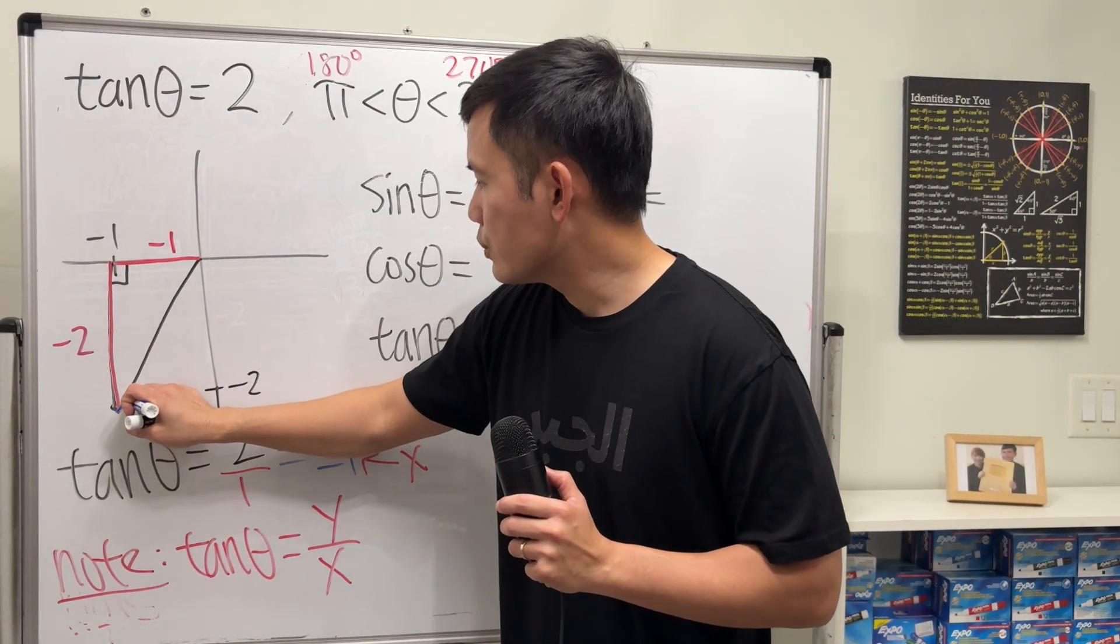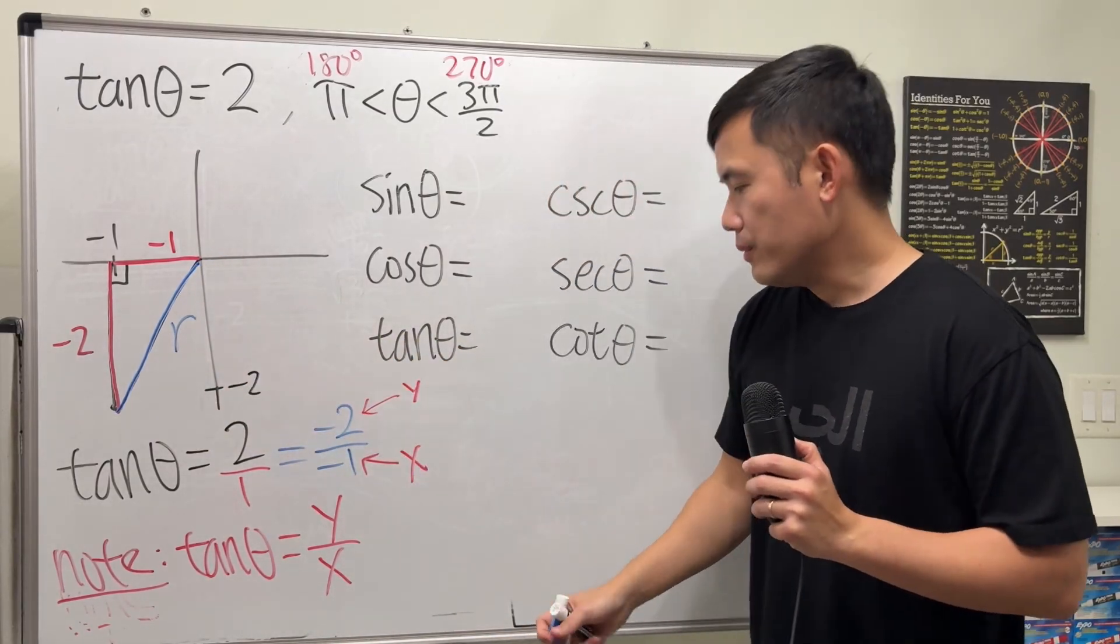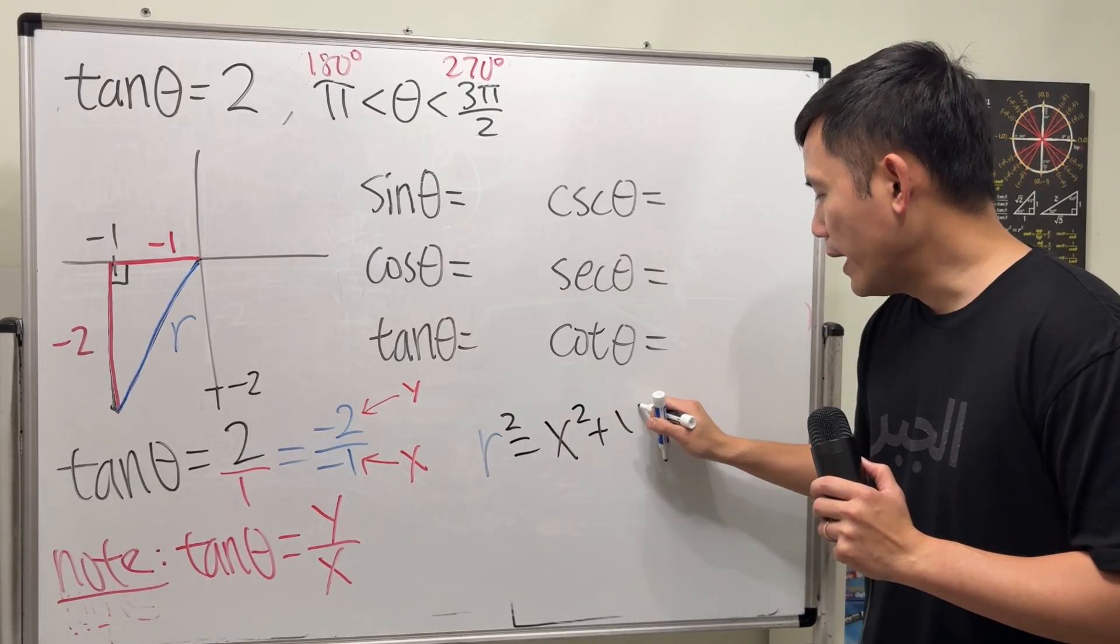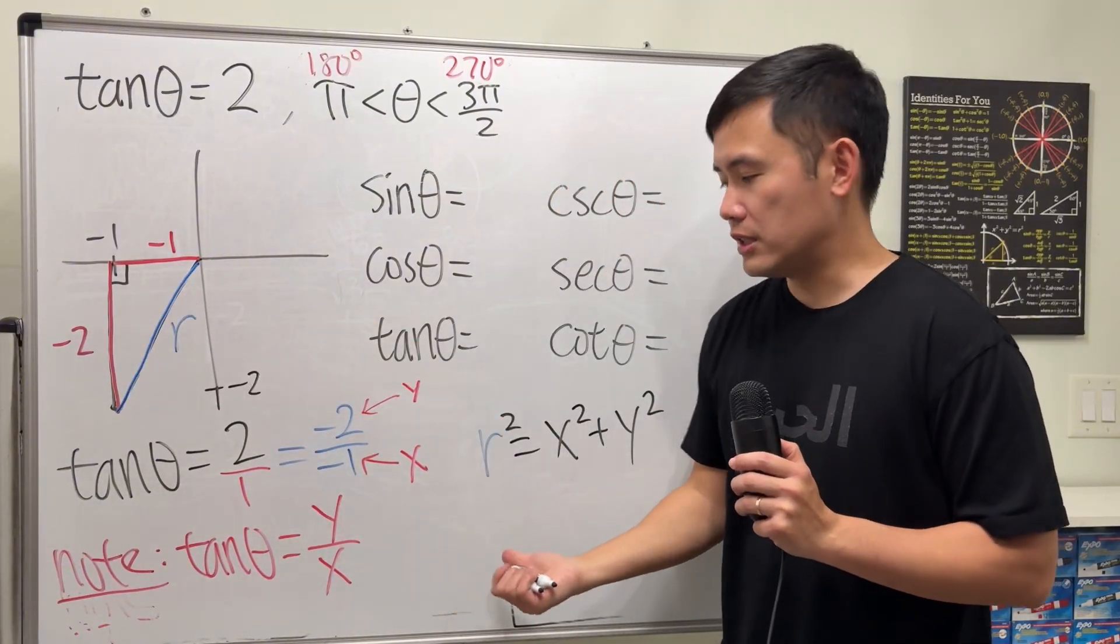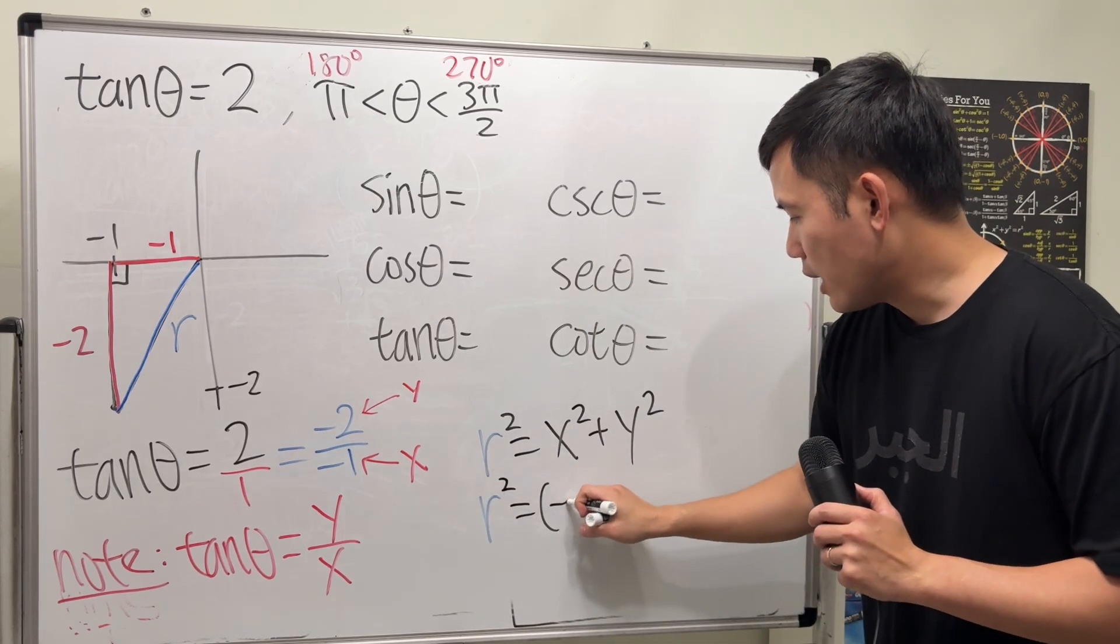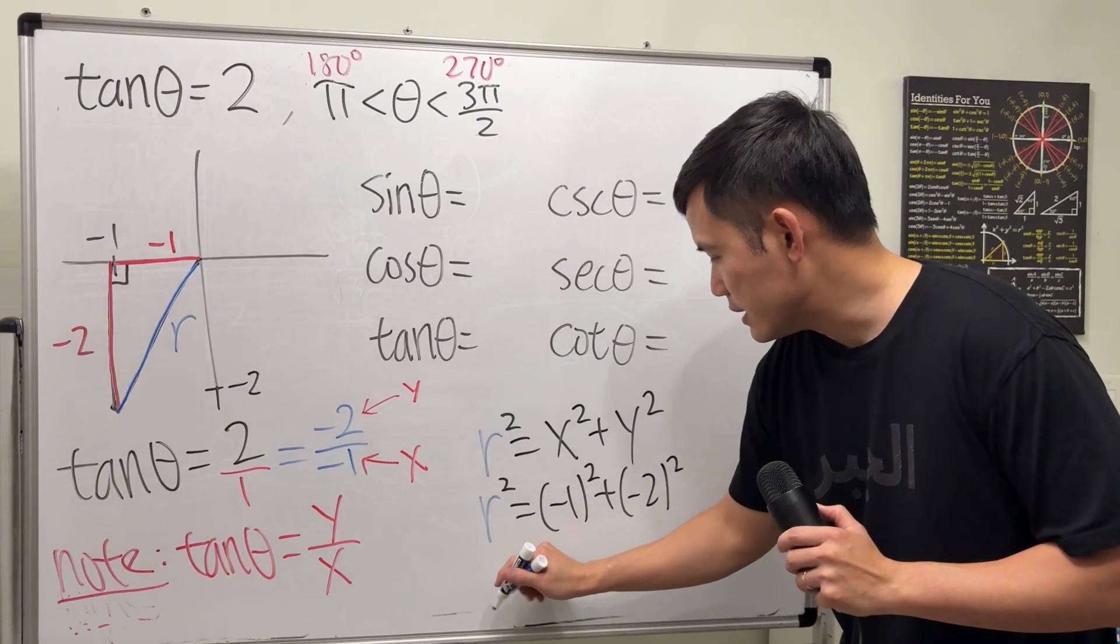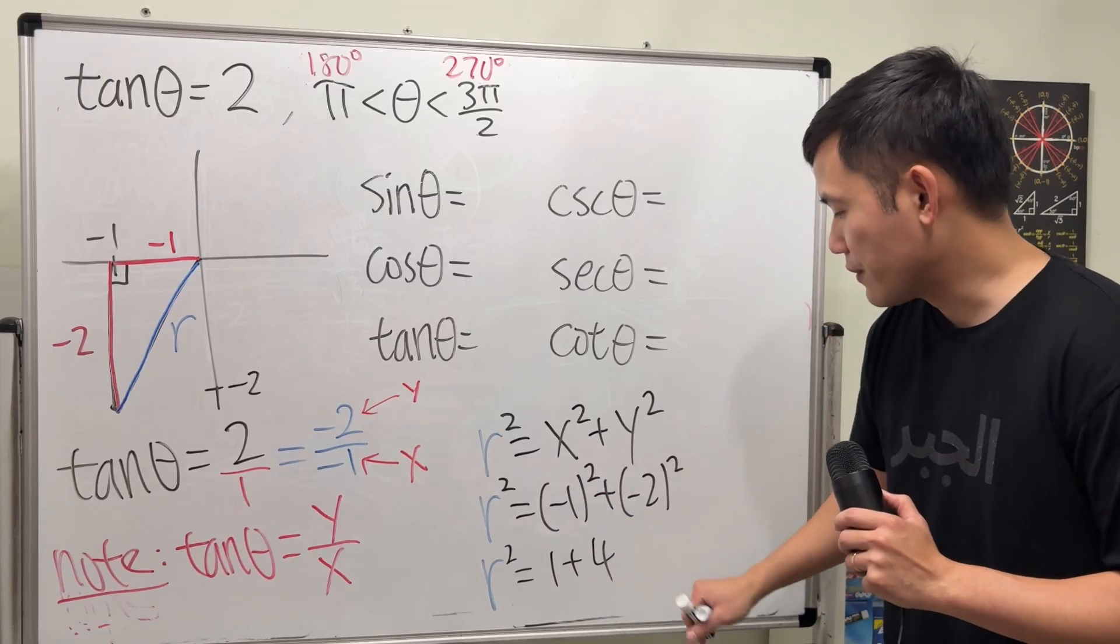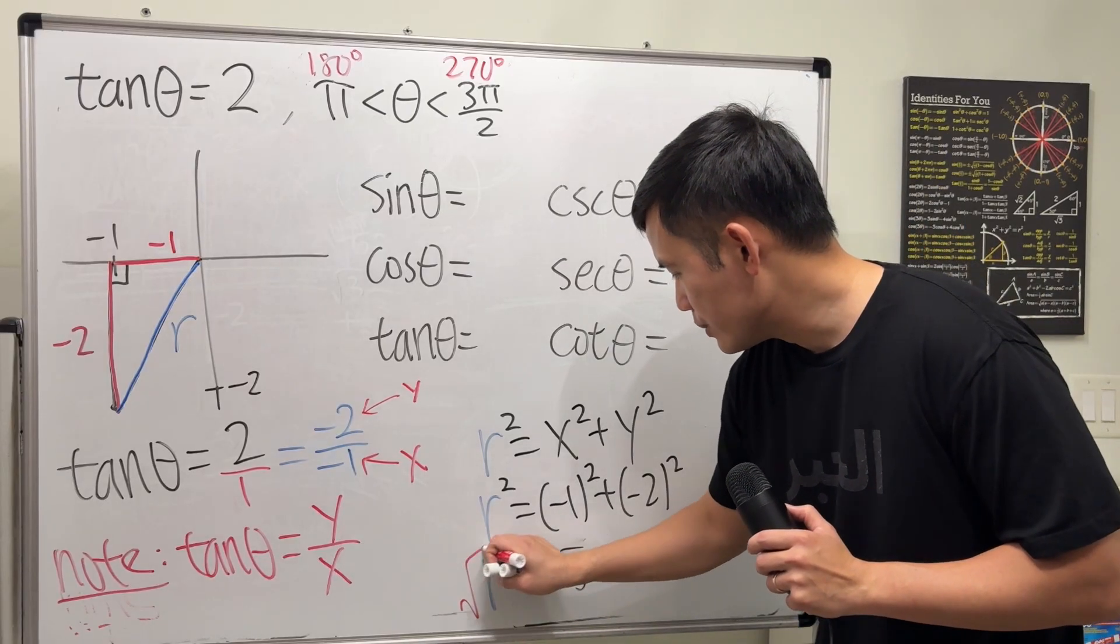Now we just have to figure out the hypotenuse, which is this distance here, and usually we call it r. r squared is equal to x squared plus y squared. This is just the Pythagorean theorem. So r squared equals x is negative 1 squared, and y is negative 2 squared. Then r squared equals 1 plus 4, which is 5. I'm just going to write down 5 and take the square root to both sides.